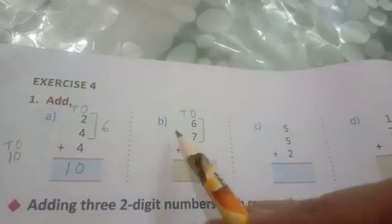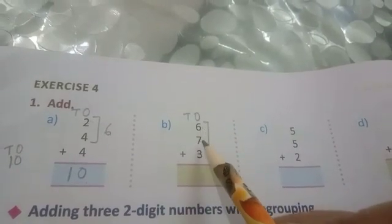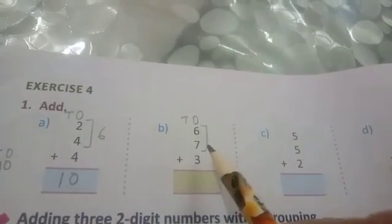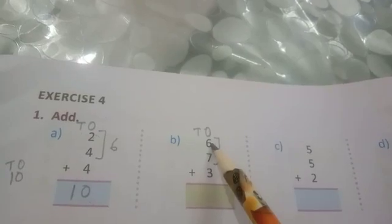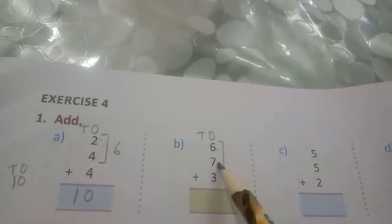Next part: 6 plus 7 plus 3. First we will add 6 and 7. 6 plus 7 equals 13.